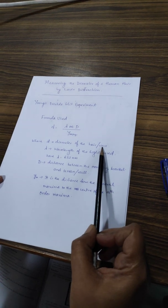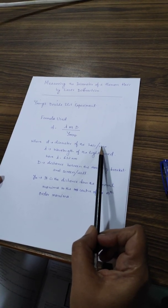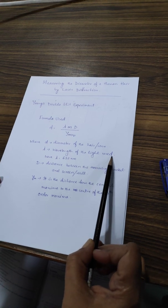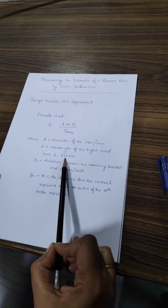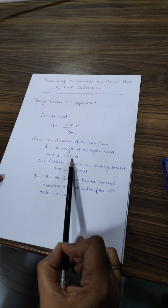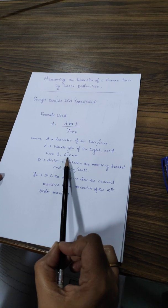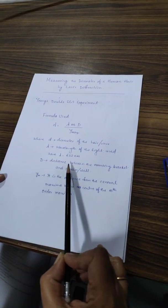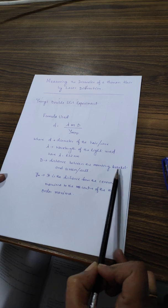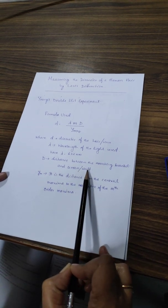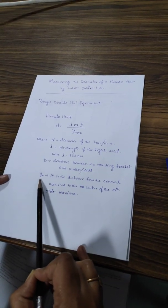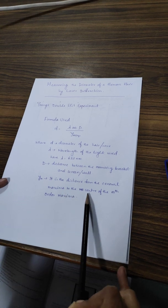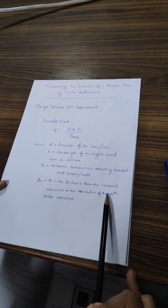Lambda is the wavelength of the light used. Here we are using a helium-neon laser whose wavelength is 632 nanometers. Capital D is the distance between the mounting bracket and the screen wall, and ym is the distance from the central maxima to the center of the mth order maxima.